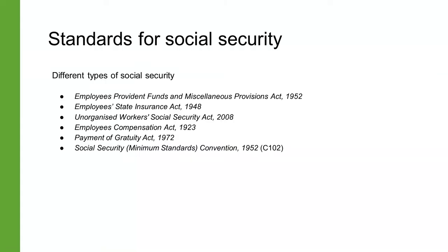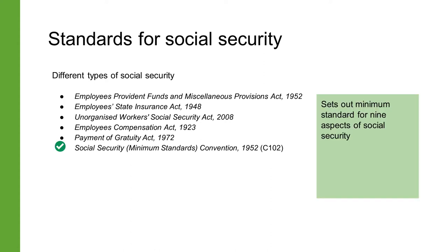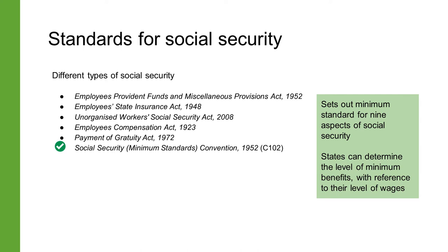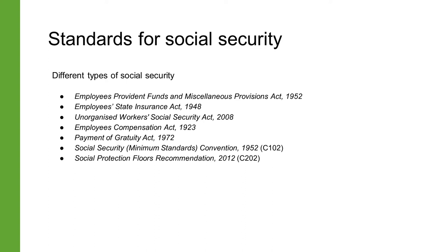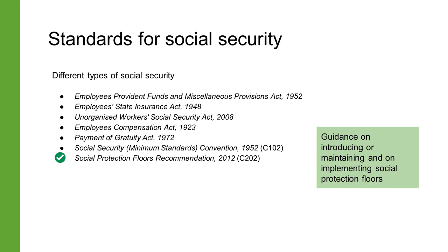The Social Security Minimum Standards Convention of 1952, which is ILO Convention 102, sets out a minimum standard for these nine aspects. States can determine the level of minimum with reference to their level of wages. States are permitted to ratify the convention by accepting the standards related to at least three aspects and subsequently accepting obligations under the others. India has not ratified this convention.